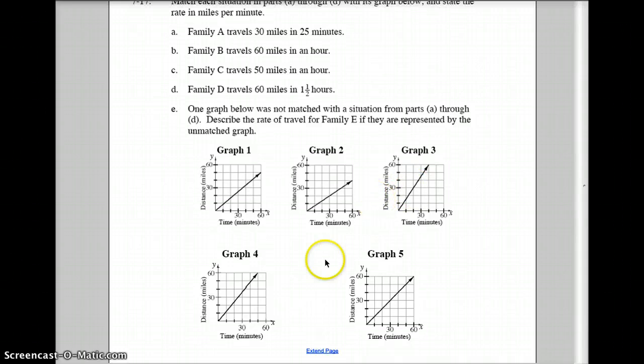Graph four, 30 miles in about 25. Hey, that looks to be about perfect. Let's just verify with the fifth one. 30 miles in 30 minutes, so that's not the one. So graph four would look like it's for letter A.